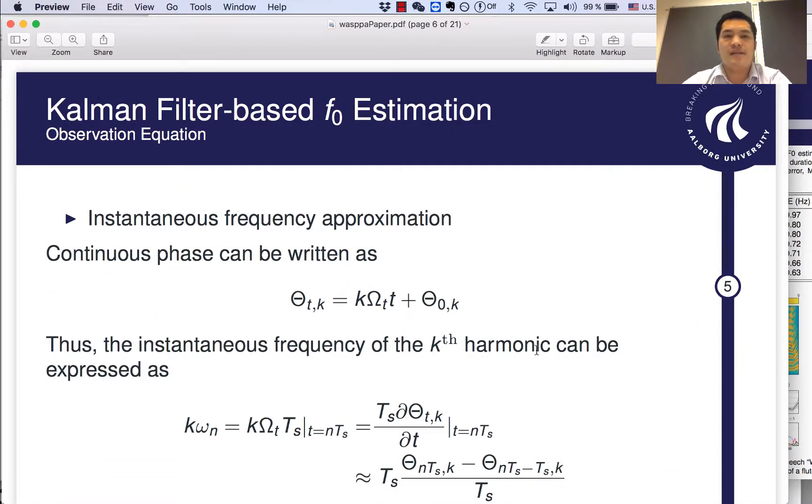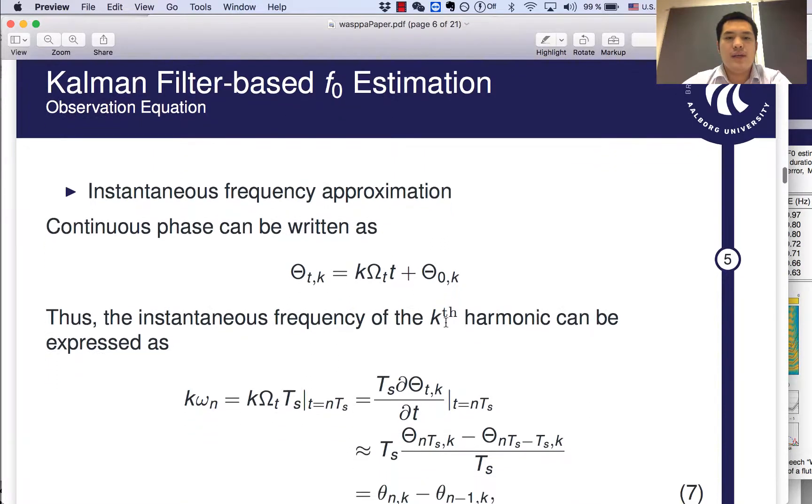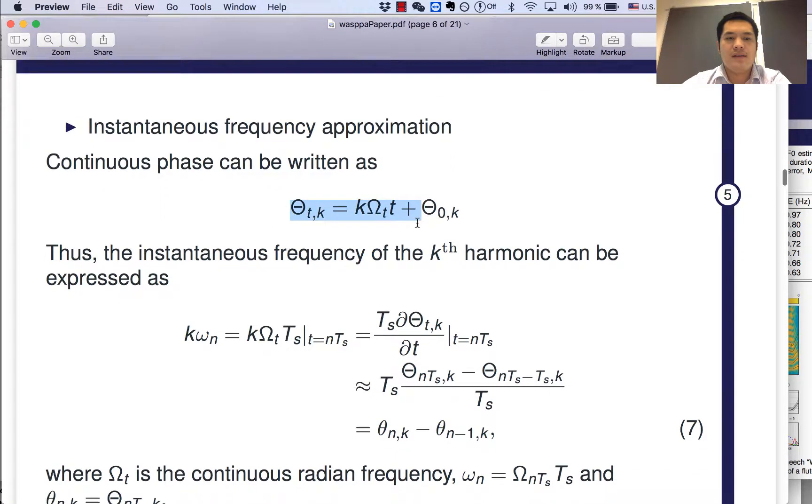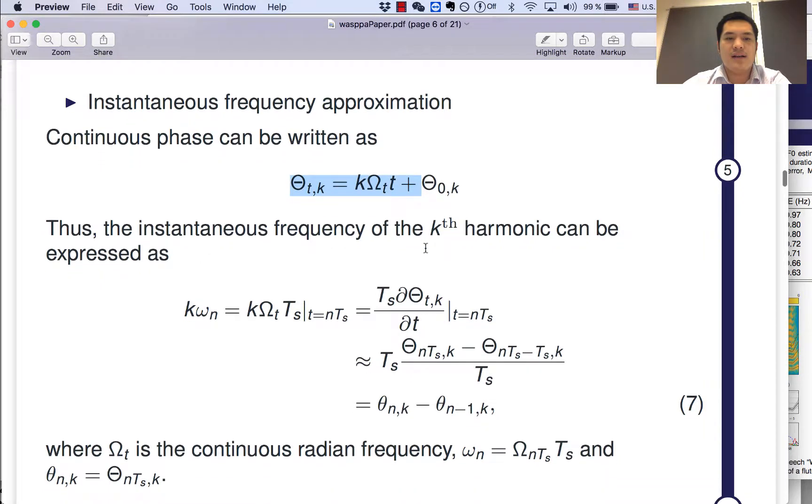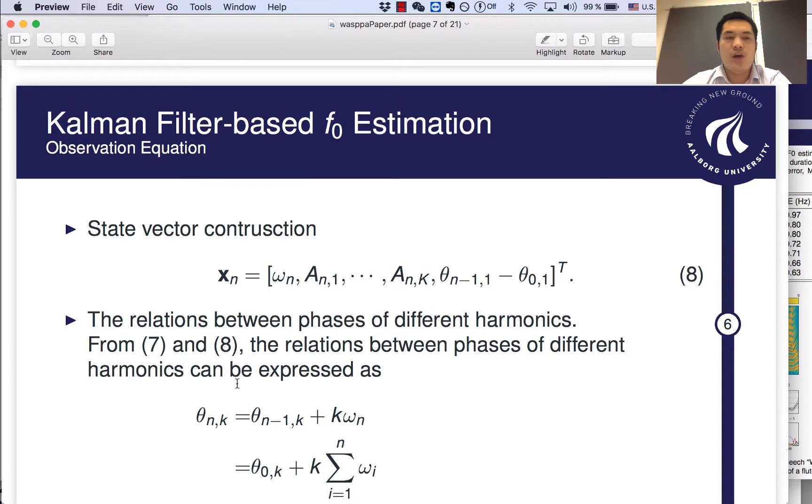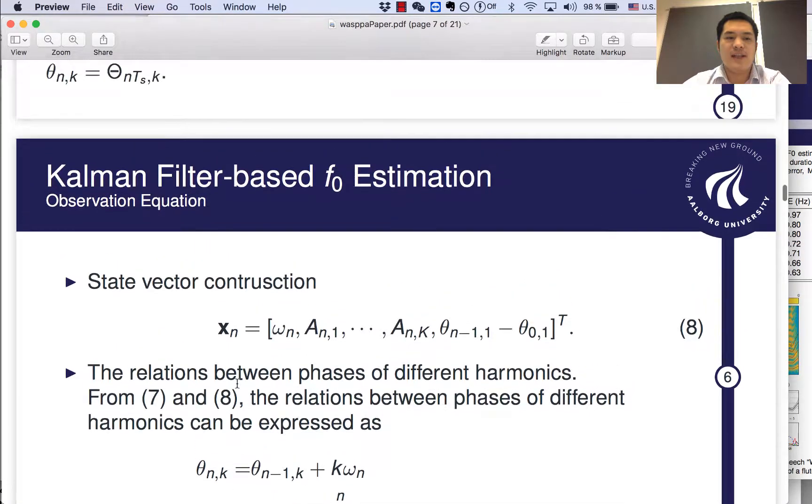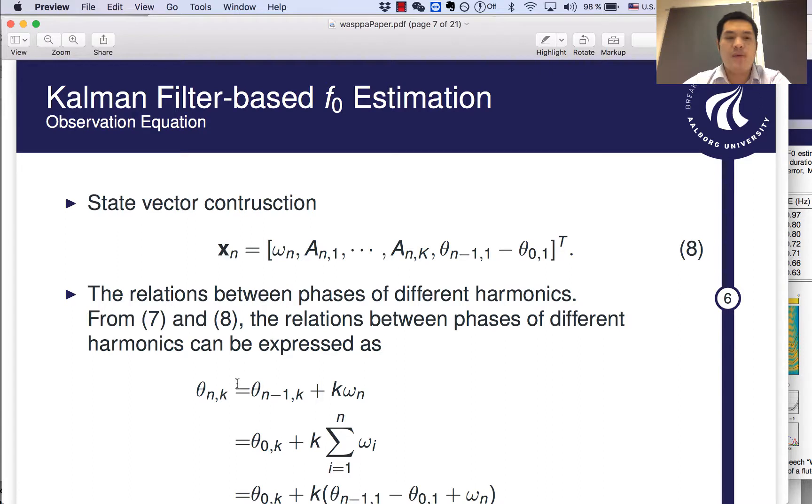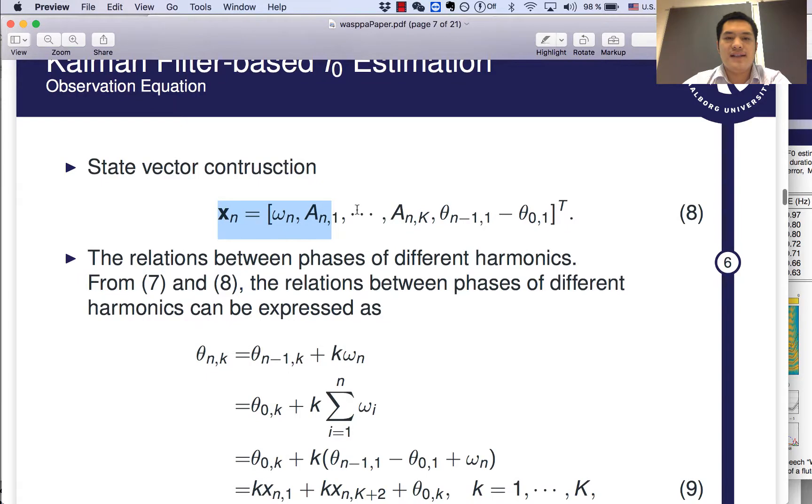Now, let's introduce the Kalman filter-based fundamental frequency estimation. If we formulate the continuous phase, we can have this form. And then the instantaneous frequency of the k-th harmonic can be approximated by the equation as follows. As we know that for the Kalman filter, we have a hidden state vector that we need to estimate. In our problem, we build the state vector as follows. So, we include the fundamental frequency, the amplitudes for different harmonics, and the phase altogether into a vector. So, the vector length is k plus 2, k is the number of harmonics.